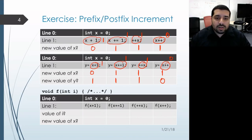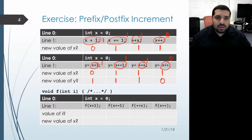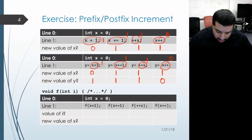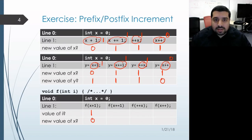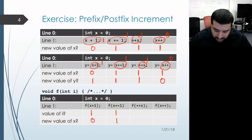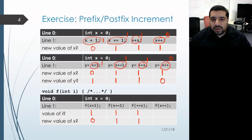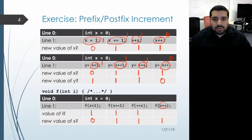The third set of examples is essentially exactly the same as the second set, except instead of assigning into a variable y, we're initializing a parameter i. The same thing happens: in the first case x retains its old value of 0 and i becomes 1; in the second case x obtains a new value of 1 and the expression also evaluates to 1, so i gets 1; in the third example x gets incremented to 1 and the expression evaluates to 1, so i gets 1 as well. Finally, x gets incremented to 1, but the result is a temporary containing the old value of x which was 0, so i gets initialized to 0.